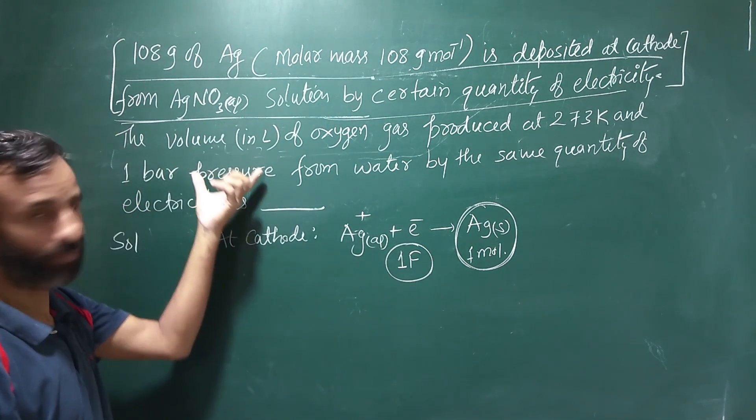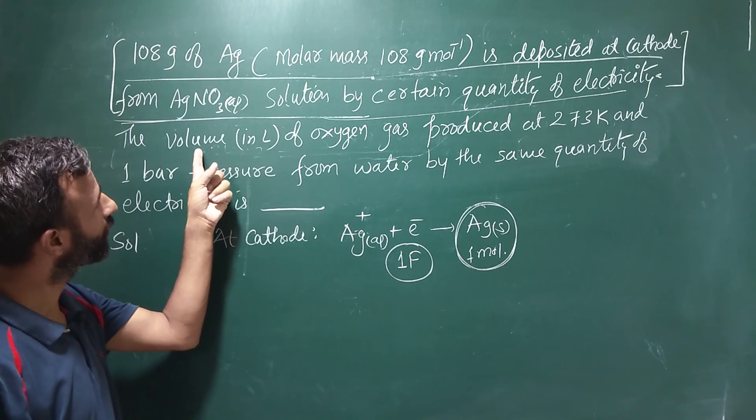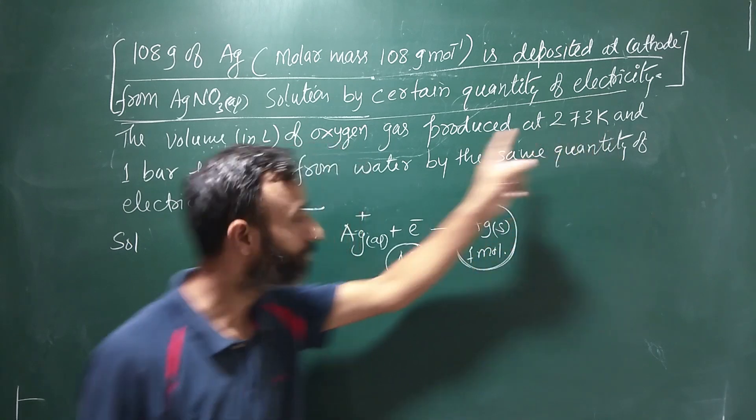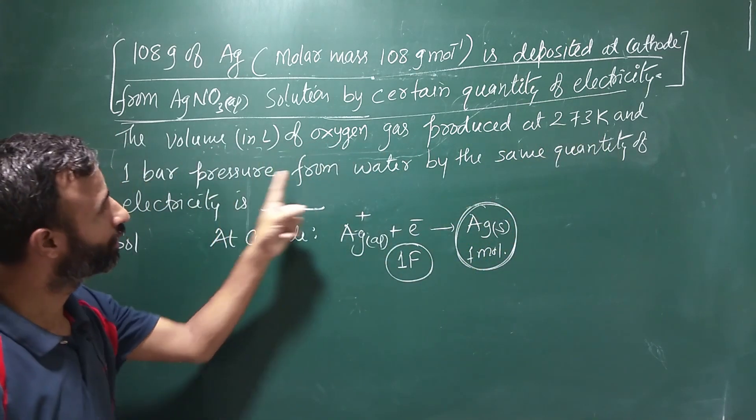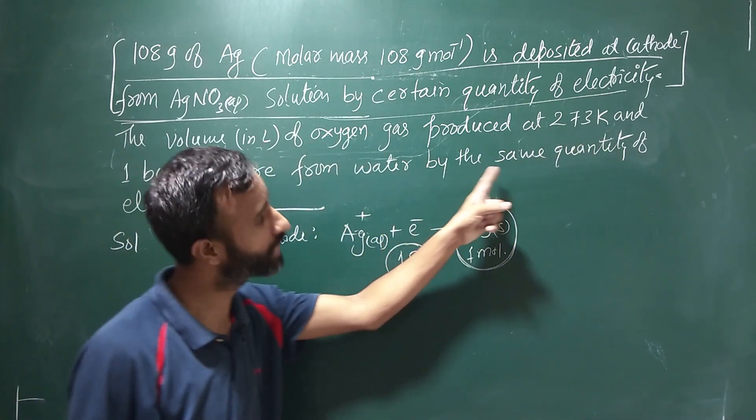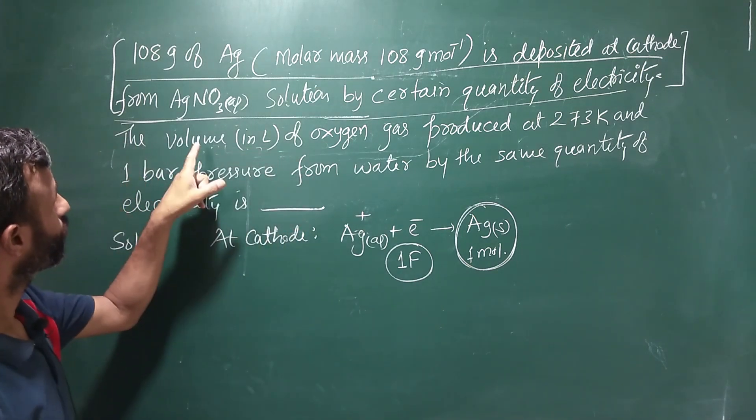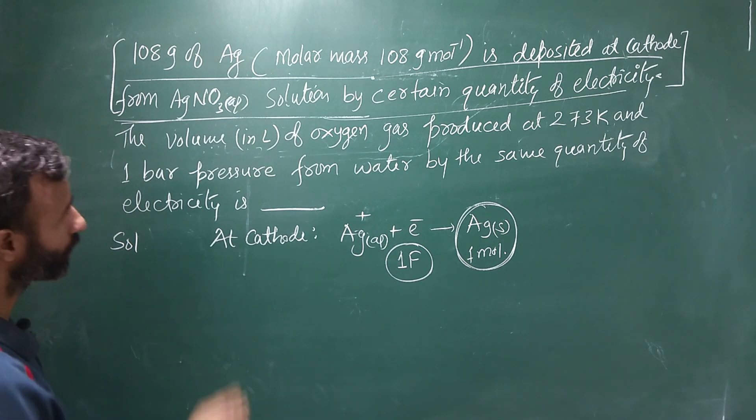Now, we have to find out volume in liter of oxygen gas produced at 273 Kelvin and one bar pressure from water by the same quantity of electricity. So, electrolysis of water.